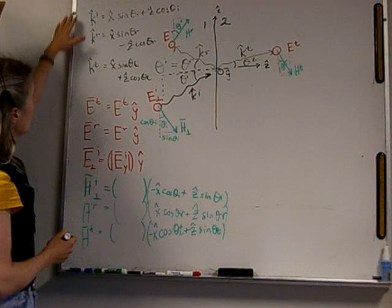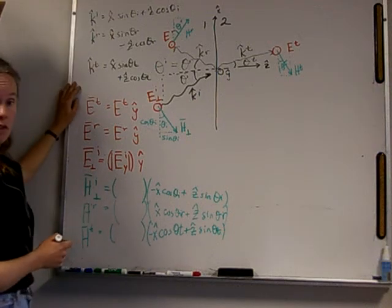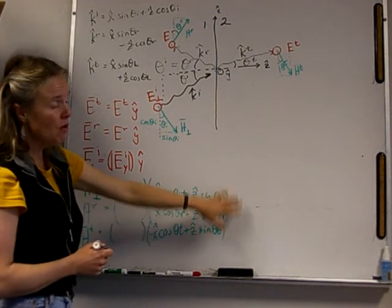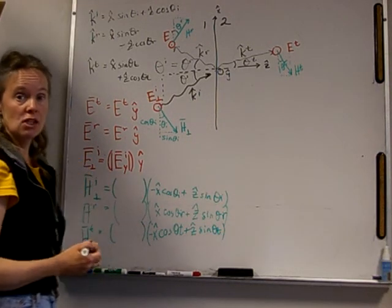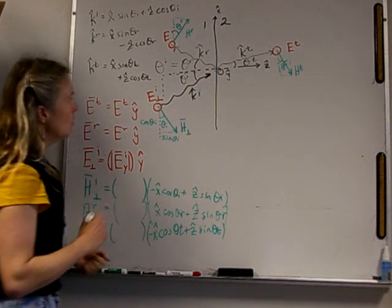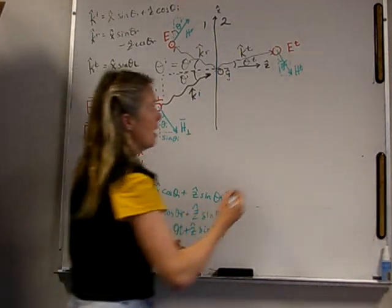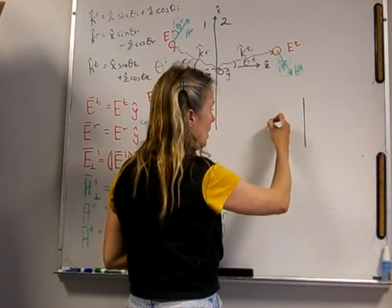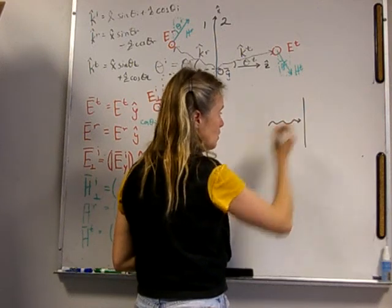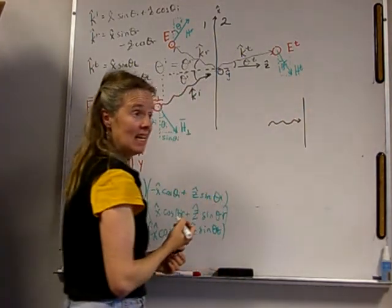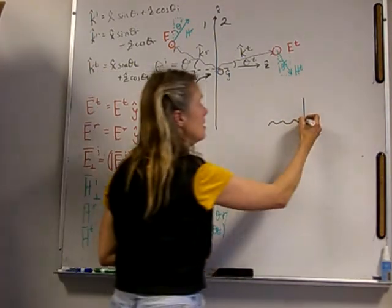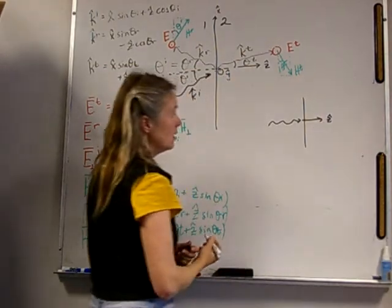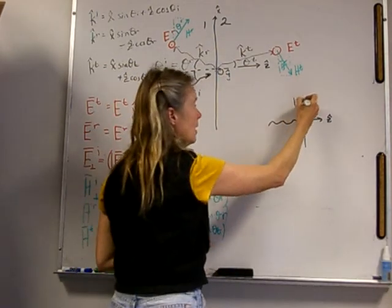Now let's take these directions of propagation and put them over as a propagation vector for the magnetic field. First, let me remind you what happened when we had a vector that was propagating in the Z direction normally.